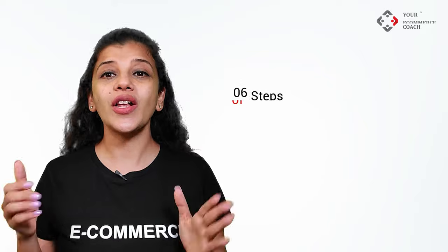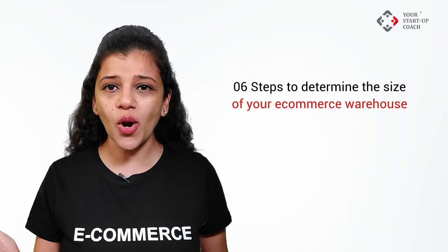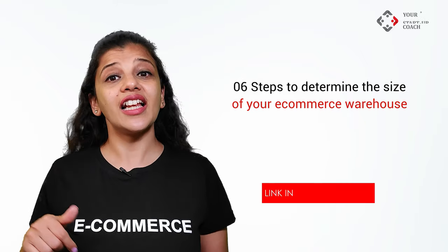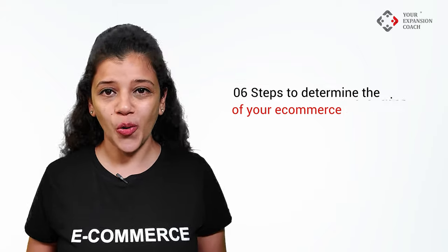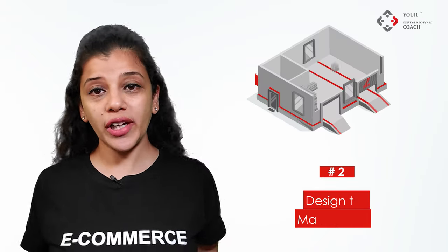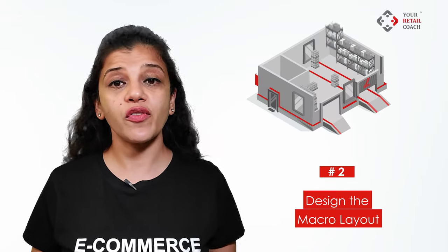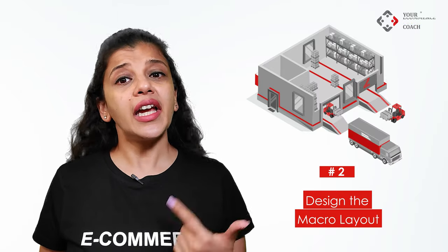We have a separate video on six steps to determine the size of your e-commerce warehouse in detail — the link is attached in the description below. Step two: design the macro layout. The macro layout consists of outer walls, inner walls which cannot be demolished, and entry and exit points of the warehouse.